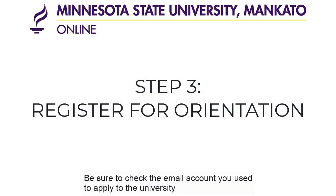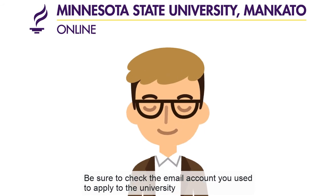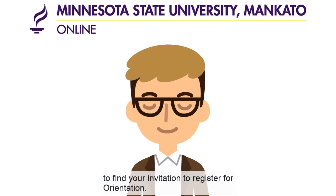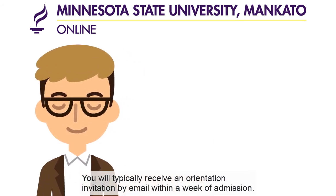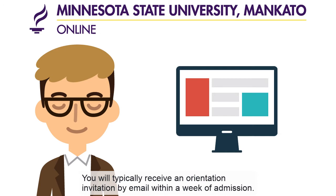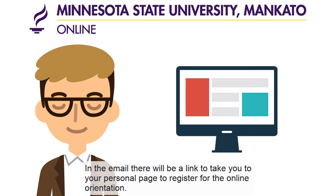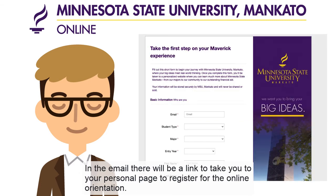Be sure to check the email account you used to apply to the university to find your invitation to register for orientation. You will typically receive an orientation invitation by email within a week of admission. In the email, there will be a link to take you to your personal page to register for the online orientation.